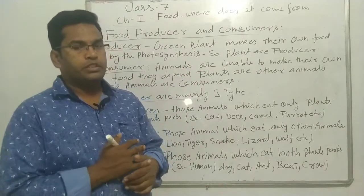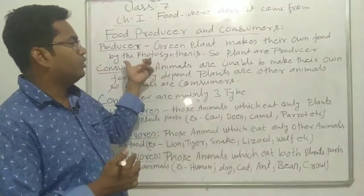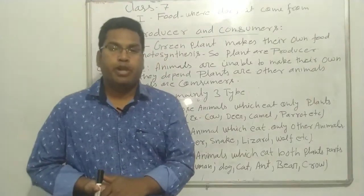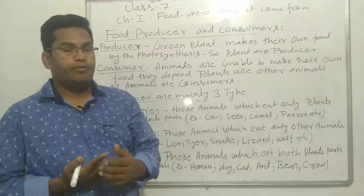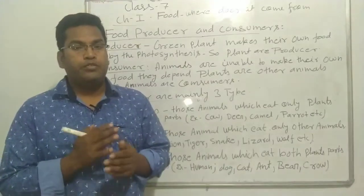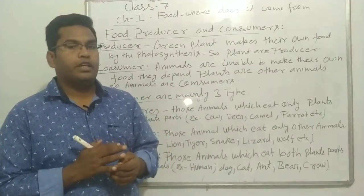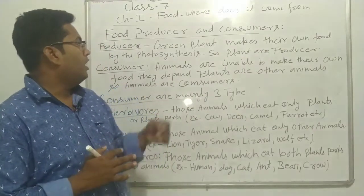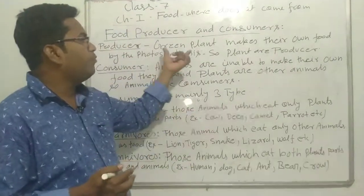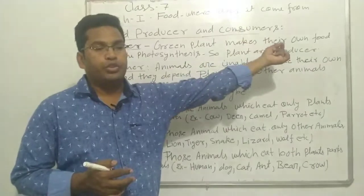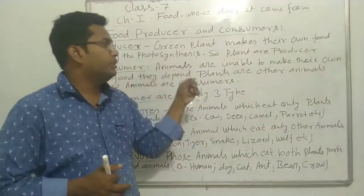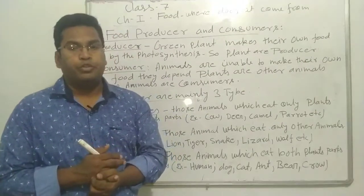Photosynthesis. Only green plants, which have green pigments called chlorophyll in the leaf, can carry out photosynthesis. The green colour in the leaf is due to chlorophyll. Green plants make their own food by photosynthesis, so plants are called producers.